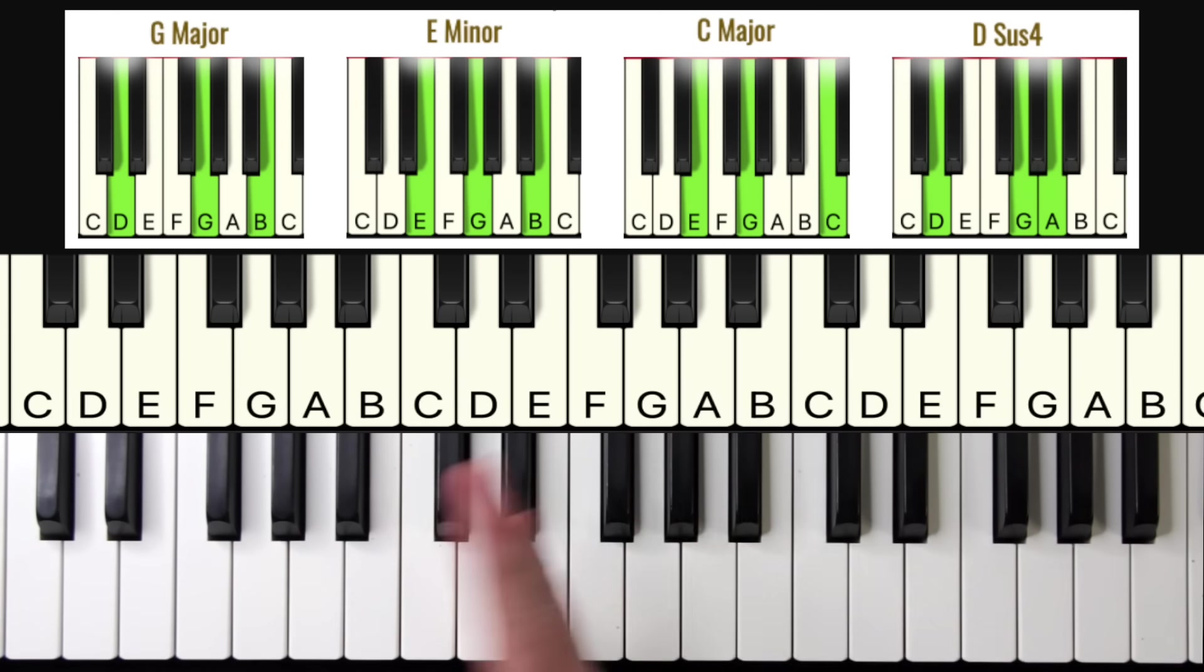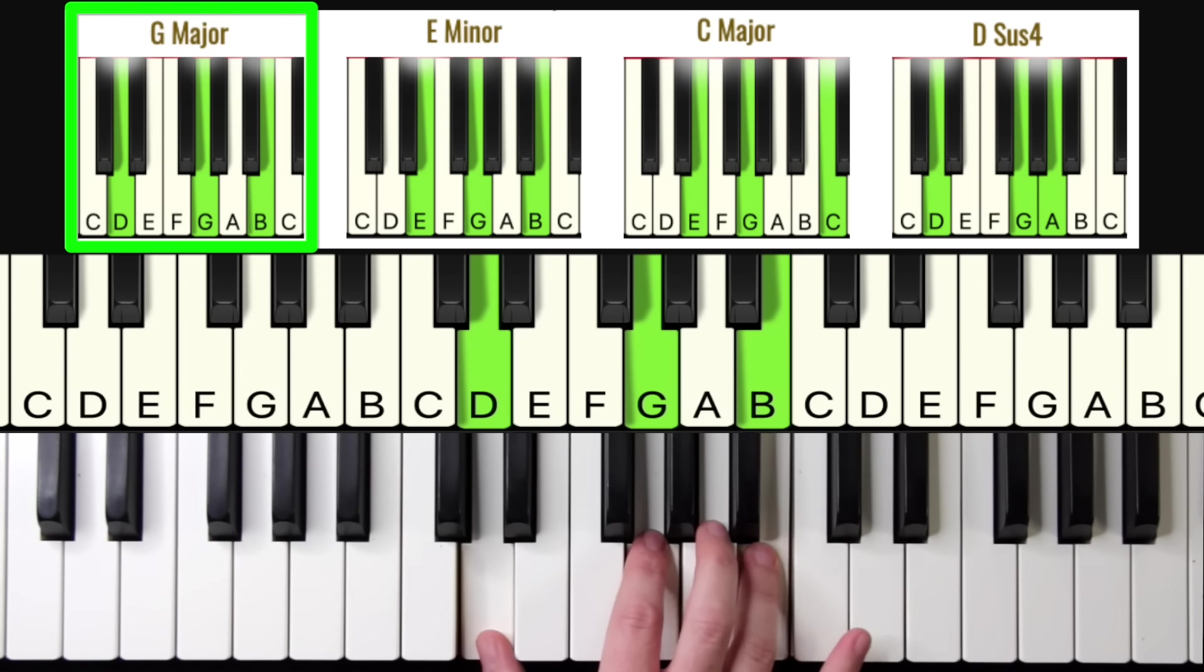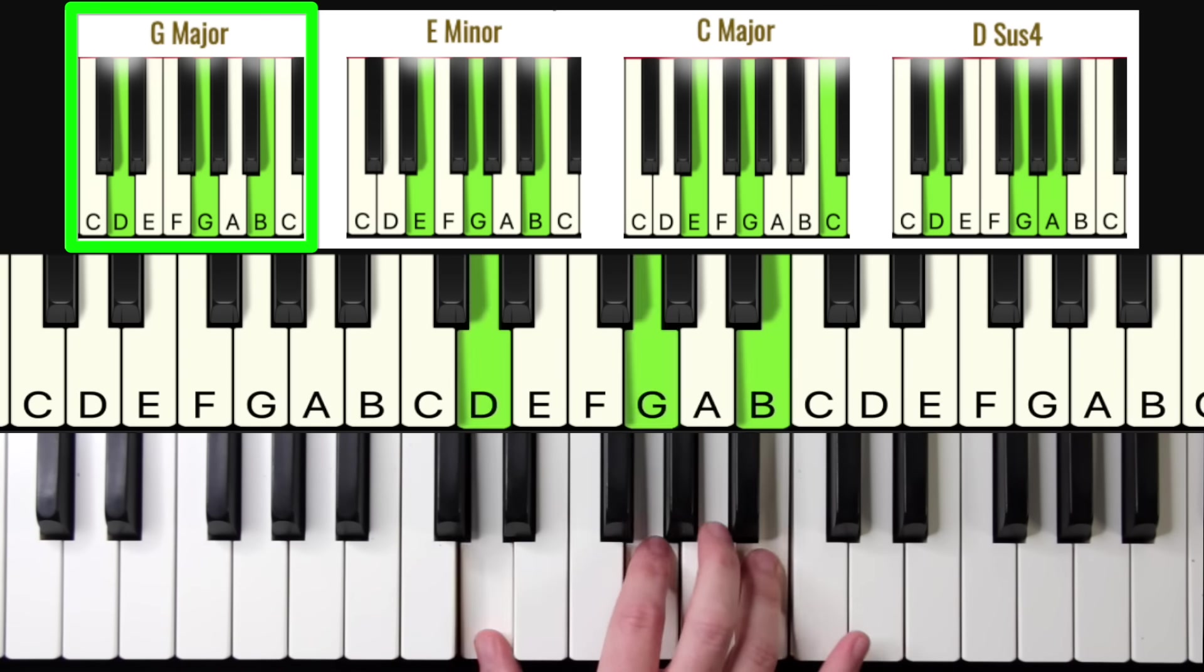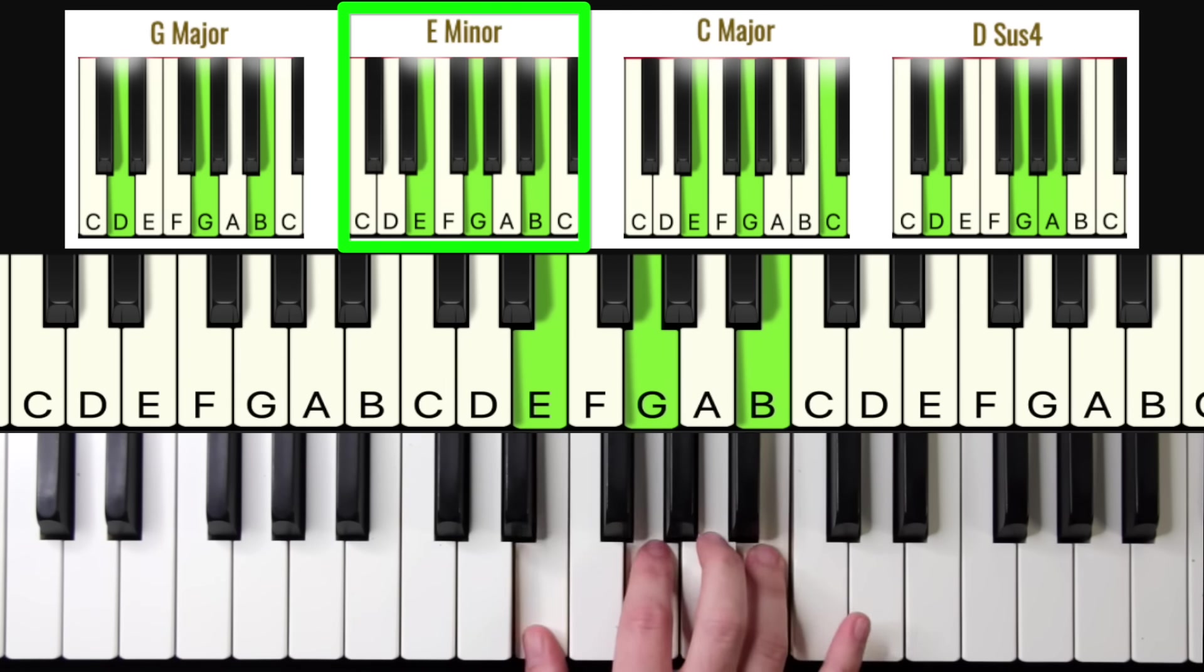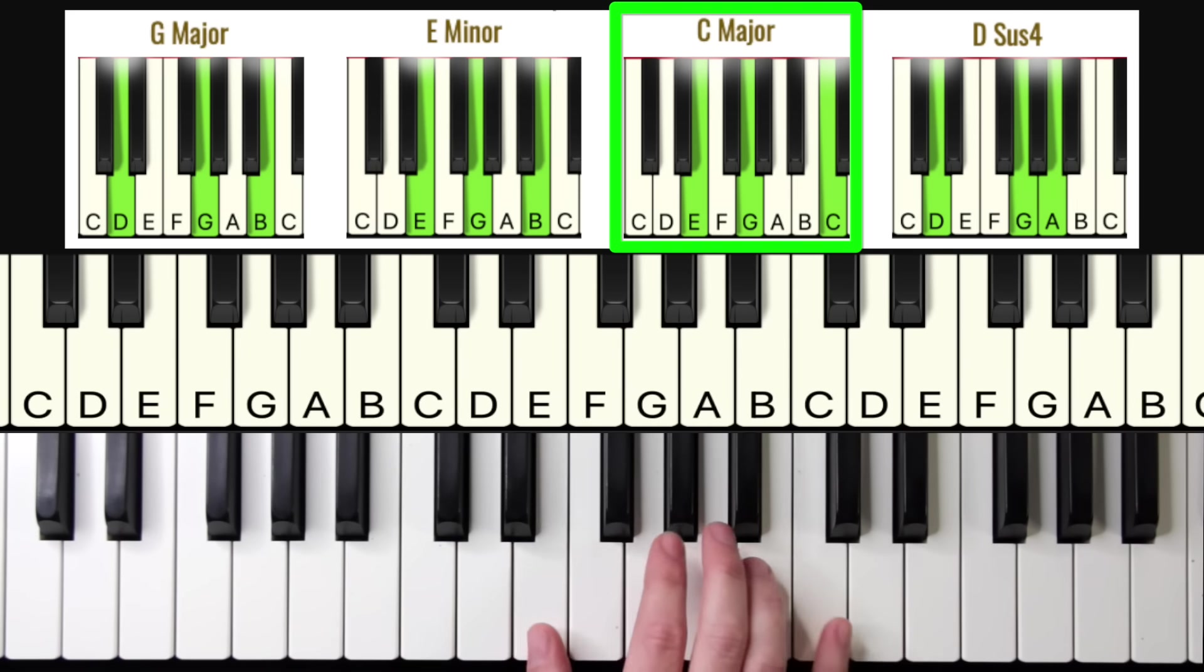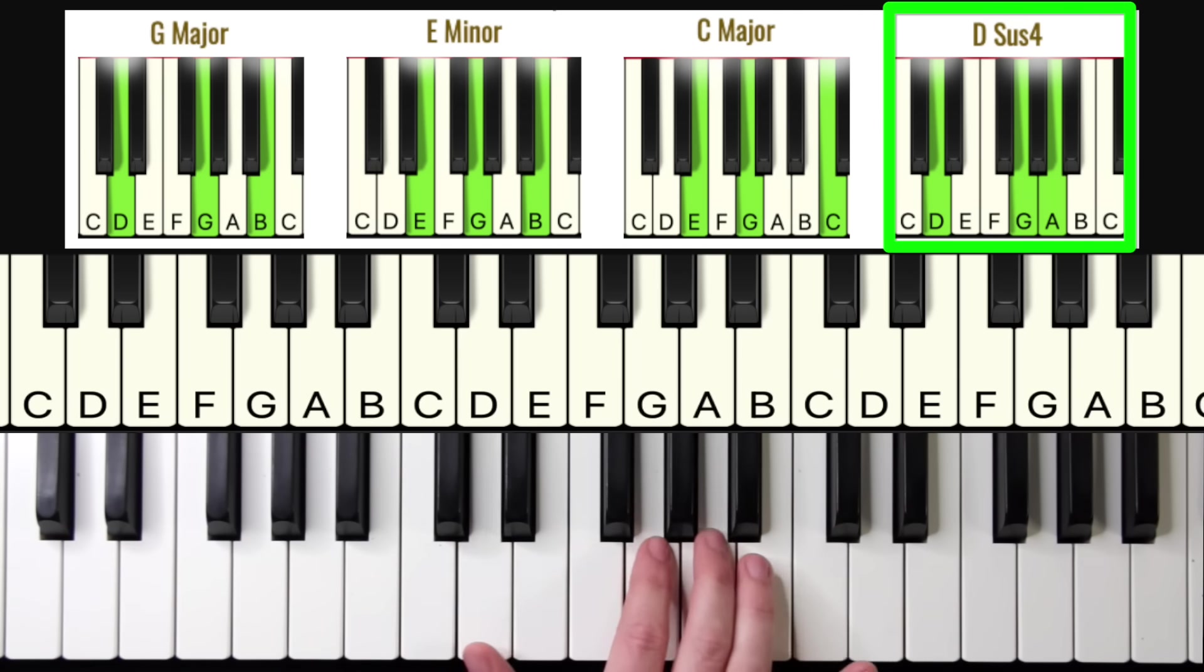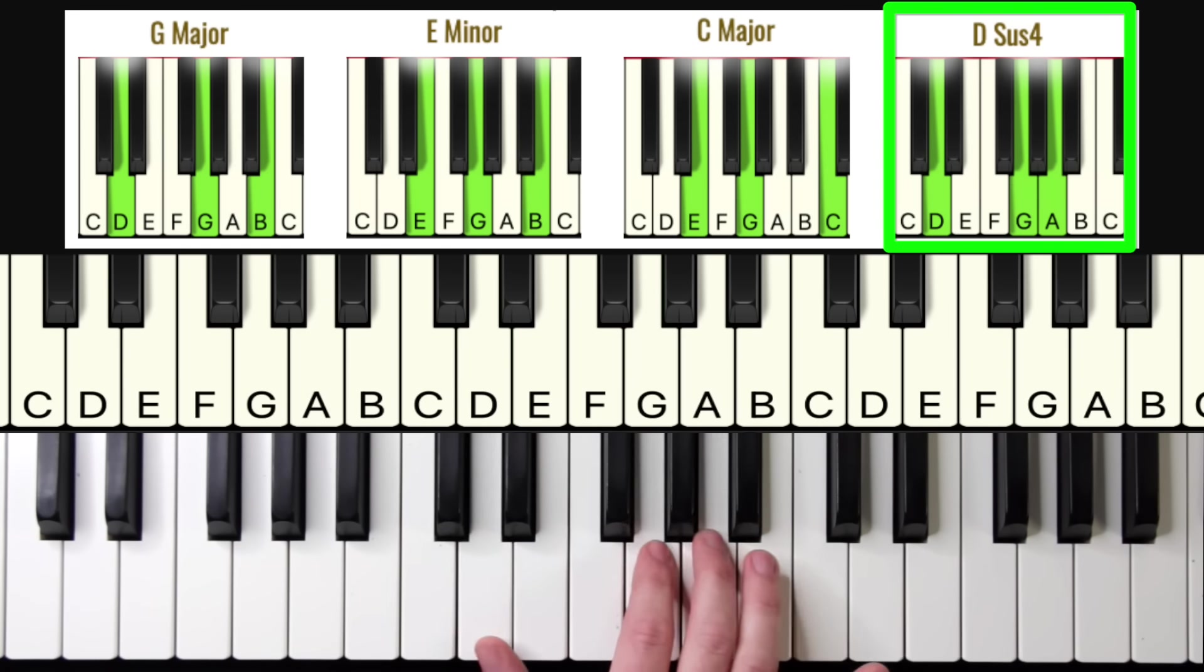All right, so now to play the song, all we have to do is play each chord eight times. So we got G, two, three, four, five, six, seven, eight. E minor, two, three, four, five, six, seven, eight. C, two, three, four, five, six, seven, eight. D sus, two, three, four, five, six, seven, eight.